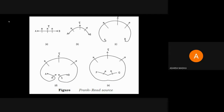A particular dislocation line is extended between two endpoints A and B, beyond which the dislocation does not lie on the slip plane. Thus the dislocation cannot grow beyond the endpoints A and B. The dislocation line segment A-B is fully available between the two points.